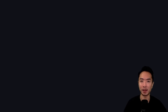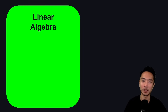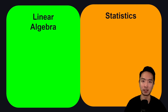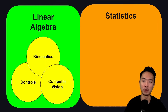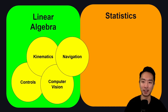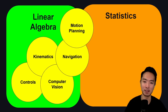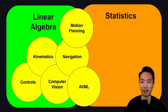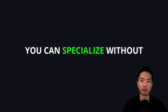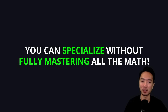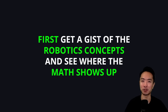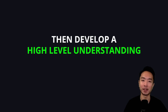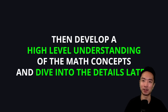There are two areas of math important for robotics: linear algebra and statistics. For controls, kinematics, and computer vision, it's going to be mostly linear algebra. Navigation is mostly linear algebra with some statistics. Motion planning and AI use a little bit of both. SLAM is going to be mostly statistics. You can specialize without fully mastering all the math. I recommend first getting a gist of the robotics concepts, seeing where the math shows up, developing a high-level understanding, and then diving into the details later.